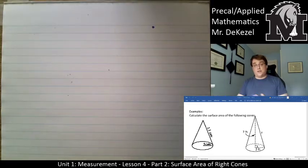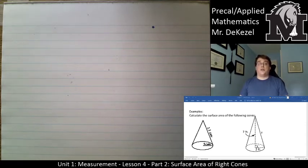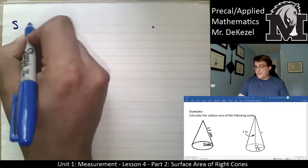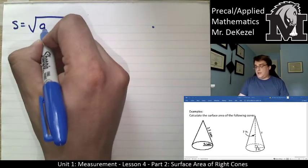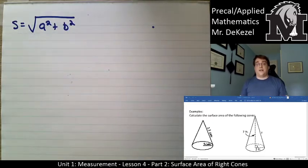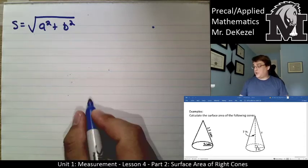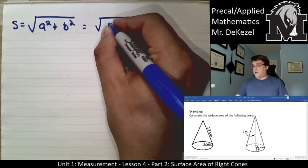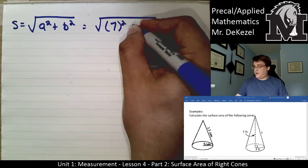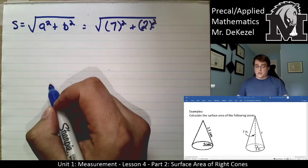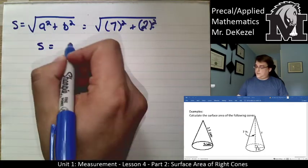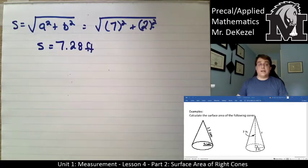For the example beside it, instead of the slant height we're given the regular height, so we need to use the Pythagorean theorem to find the slant height. The slant height equals the square root of a² plus b², where a is the height and b is the radius. That equals the root of 7² plus 2², giving a slant height of 7.28 feet.